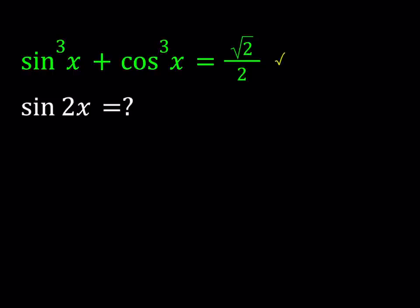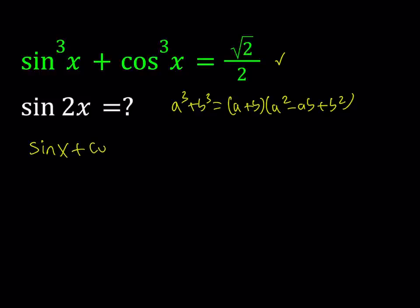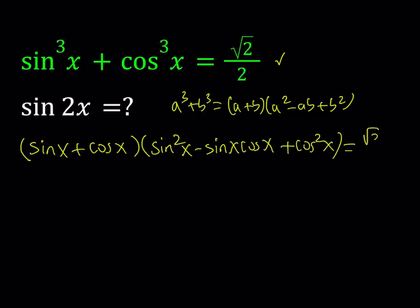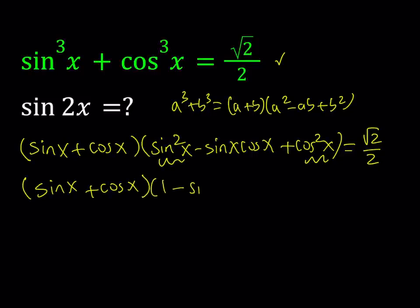This expression is a sum of two cubes, so I'm going to use the formula a cubed plus b cubed, which equals a plus b multiplied by a squared minus ab plus b squared, to factor the original expression. The first factor is sine x plus cosine x, and the second factor is sine squared x minus sine x cosine x plus cosine squared x, all equal to square root of 2 over 2. Notice that sine squared x plus cosine squared x equals 1, so I can write the expression as (sine x plus cosine x) multiplied by (1 minus sine x cosine x).